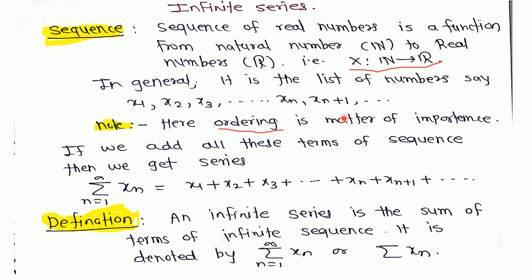In general, we can define an infinite series as the sum of the terms of an infinite sequence. It is denoted by summation where n runs from 1 to infinity of xn. Since the terms of the sequence are x1, x2, x3, and so on, if we add all these terms — x1 plus x2 plus x3, and so on — then we get the series of xn.